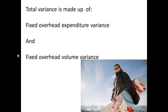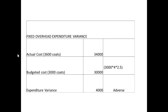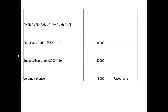This total variance is made up of two parts: the fixed overhead expenditure variance and the fixed overhead volume variance. For the expenditure variance: the actual cost for 3,600 coats was £34,000, whereas the budgeted cost, which was for 3,000 coats, was £30,000. That gives an expenditure variance of £4,000, which is adverse because the actual is greater than the budget.